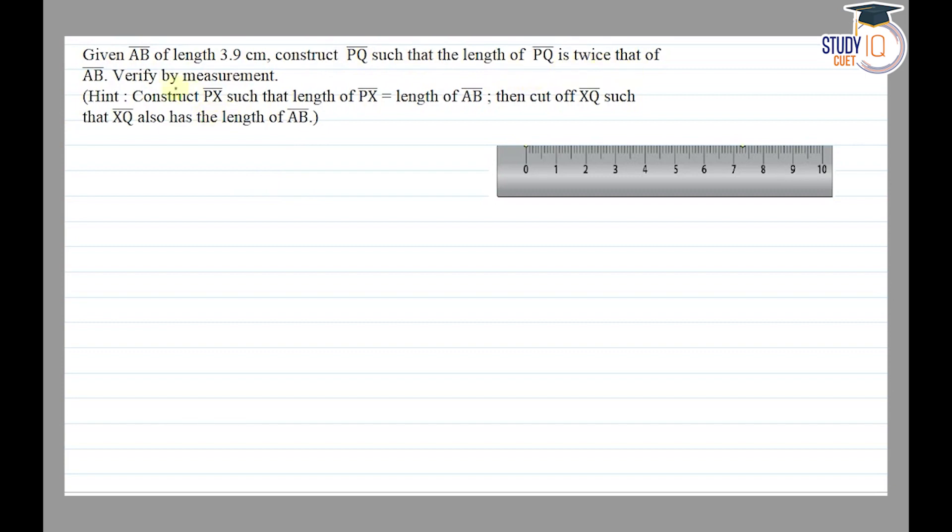So firstly, I'm drawing a line segment using a ruler of AB of 3.9 centimeter. Then construct PQ such that the length of PQ is twice that of AB.